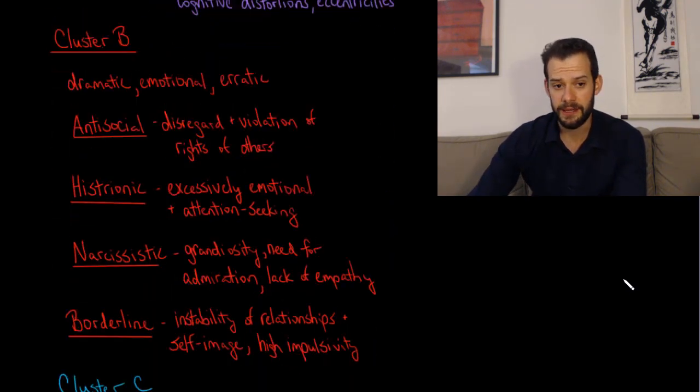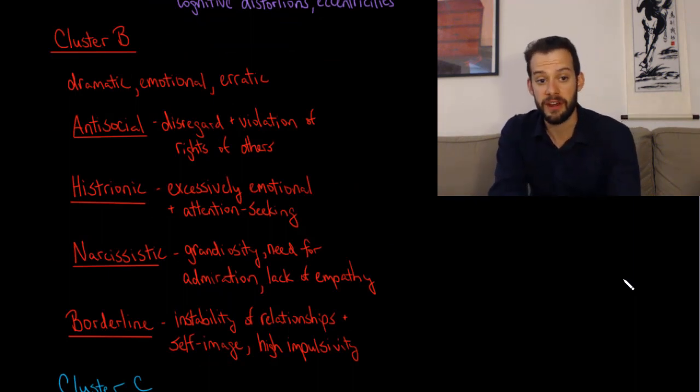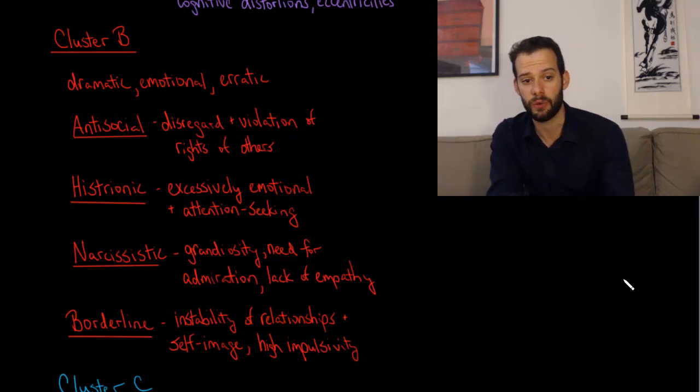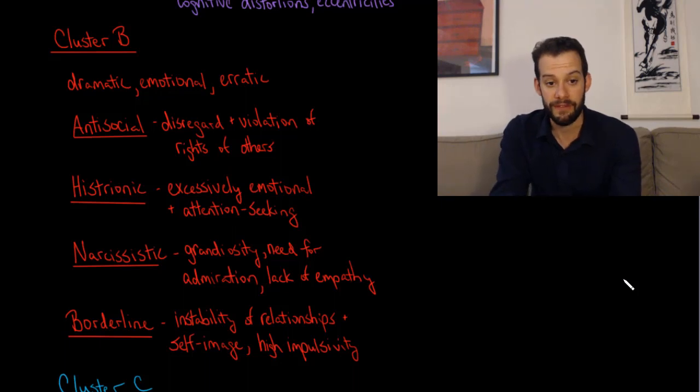Next we have cluster B and this refers to personalities that are dramatic, emotional, or erratic. First we have antisocial personality disorder and the main symptom here is a disregard and violation of the rights of others. We have histrionic personality disorder which refers to being excessively emotional or attention seeking. We have narcissistic personality disorder which refers to grandiosity, a need for admiration from others, and a lack of empathy. And borderline personality disorder which refers to instability of one's relationships and self-image and high impulsivity.